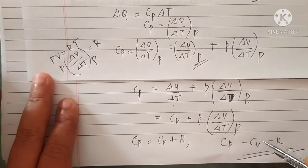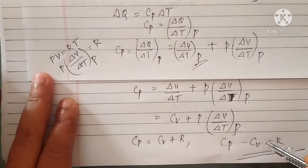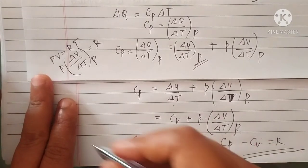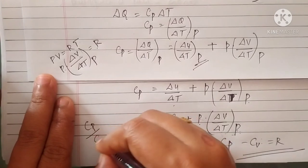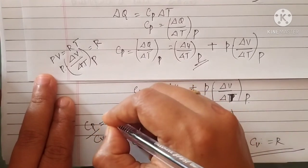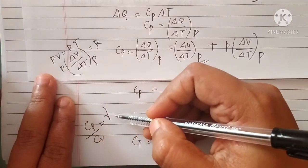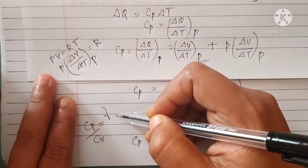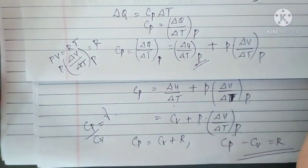Also, the ratio of Cp to Cv is given by gamma: Cp by Cv equals gamma. That's all about Mayer's equation — the key result is Cp minus Cv equals R.